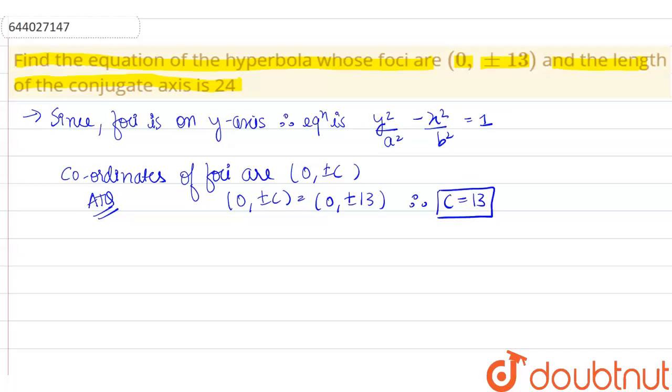Moving further, we see length of the conjugate axis equals to 2b. According to question, 2b equals to 24, which implies b equals to 12.